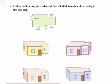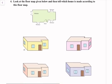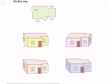Look at the floor map given below and then tell which house is made according to the floor map. So we have to see that there is one window here, one window here, one window here, and one window here. The first option will be cancelled because it matches the map. We have three options — one, two, three. We see the window placement, a door, and this window. So this is our correct option.